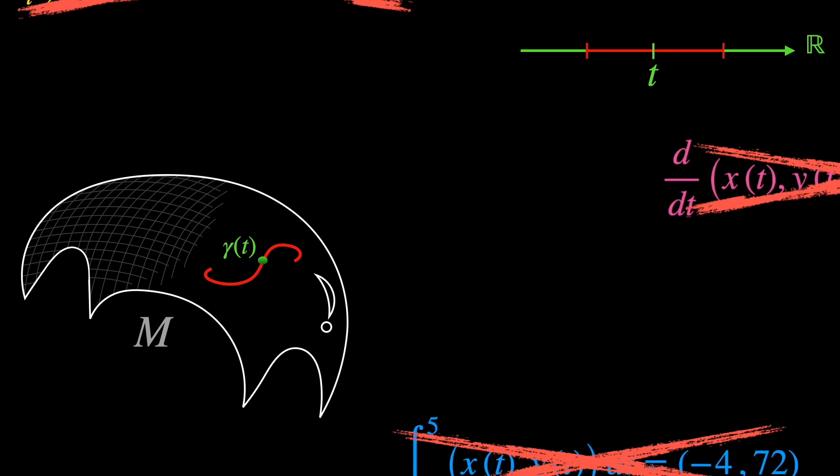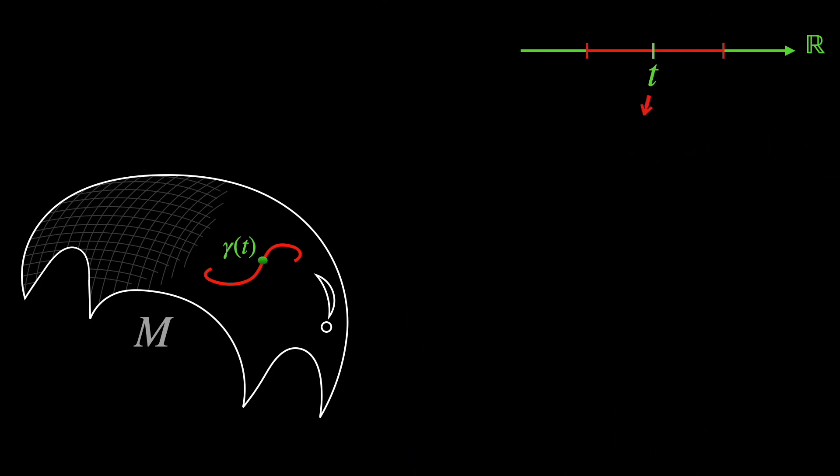We cannot do calculus anymore because now we found out that actually gamma is a mapping from the Euclidean or flat space R to the non-Euclidean, so not flat curved space M. We usually call this space M because it is a manifold. If you want to know in detail, in a very intuitive way, what a manifold is, watch this video right here after finishing this one, of course, and we'll link it in the description as well.